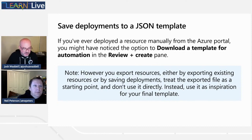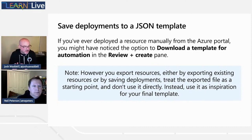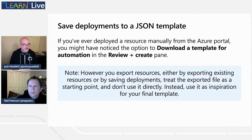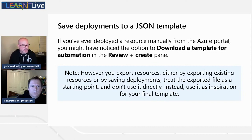One last point: this deployment template we're saving — whether it's a resource or a resource group — this is our starting point. We're going to use this to build our new files from there. We want to treat the exported file as a starting point. We don't want to make initial modifications to that particular file.